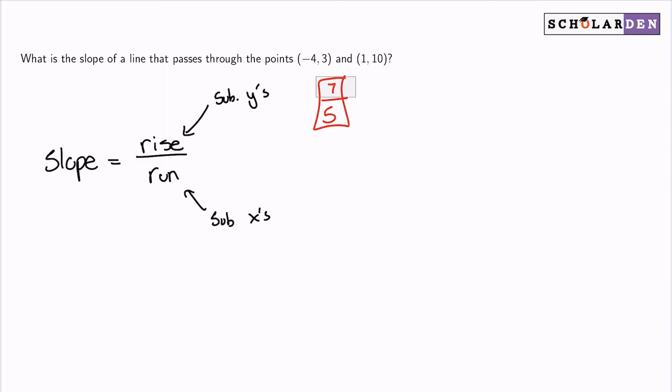And here's what we need to remember. Remember that we need to do it in order. If we subtract 3 from 10, then we need to do the same order and subtract negative 4 from 1. We have to do it in the same order with the points. It doesn't matter which way you go, just commit to the same order.